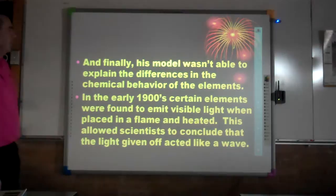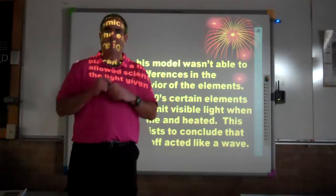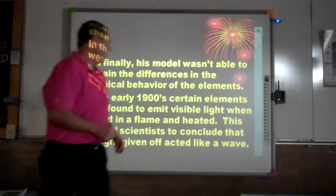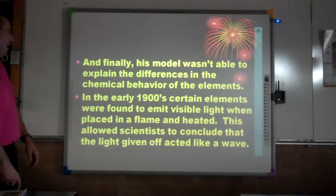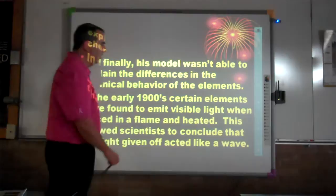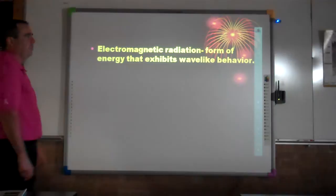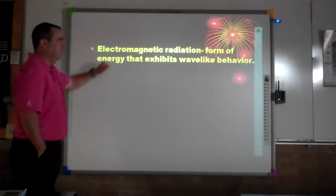In the early 1900s, certain elements were found to emit visible light when placed in a flame test. Some elements produce orange colors, some green, some blues — think of a fireworks show. Certain elements emitted different colors of visible light, and this allowed scientists to conclude that light given off was going to act like a wave. All of this light that elements were giving off was going to be electromagnetic radiation, which is a form of energy that exhibits wave-like behavior.